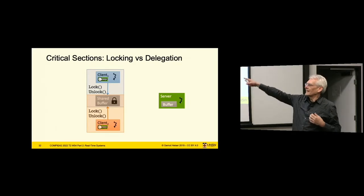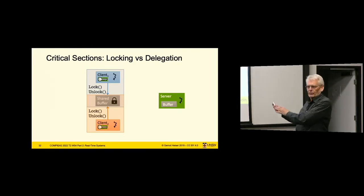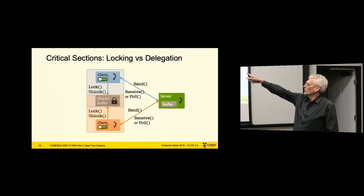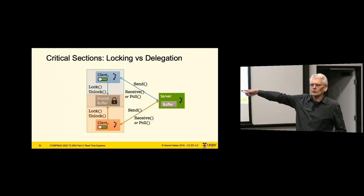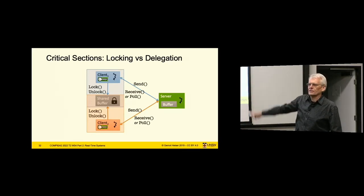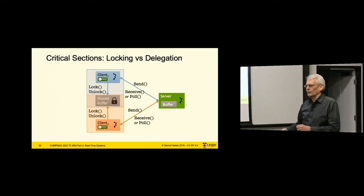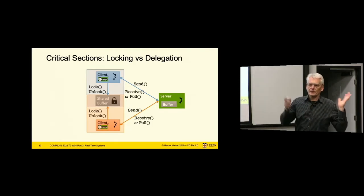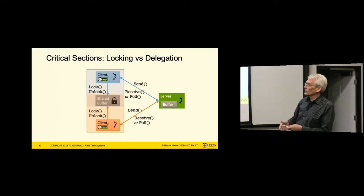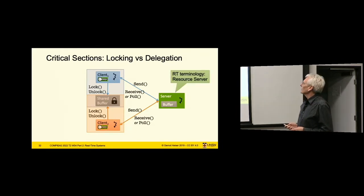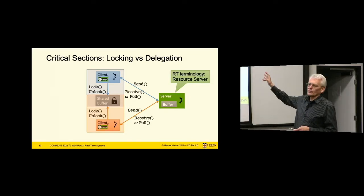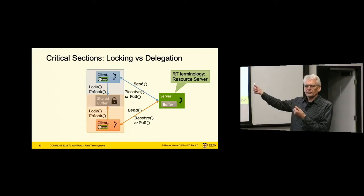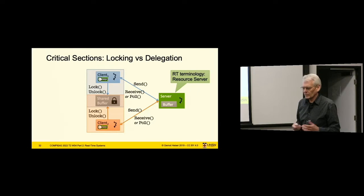The alternative is we don't let anything directly mess with the shared state, but we encapsulate that in a trusted server. This is called delegation: in order to access the shared data, you send a message to the server and get the data back. If ground communication wants to update waypoints, it sends them to the shared server, which does updates presumably with some sanity checking, then replies back. This reduces trust from having to trust everything to just having to trust the shared server. In real-time speak, this server is called a resource server, because it encapsulates a resource — in this case the shared buffer containing the waypoints.